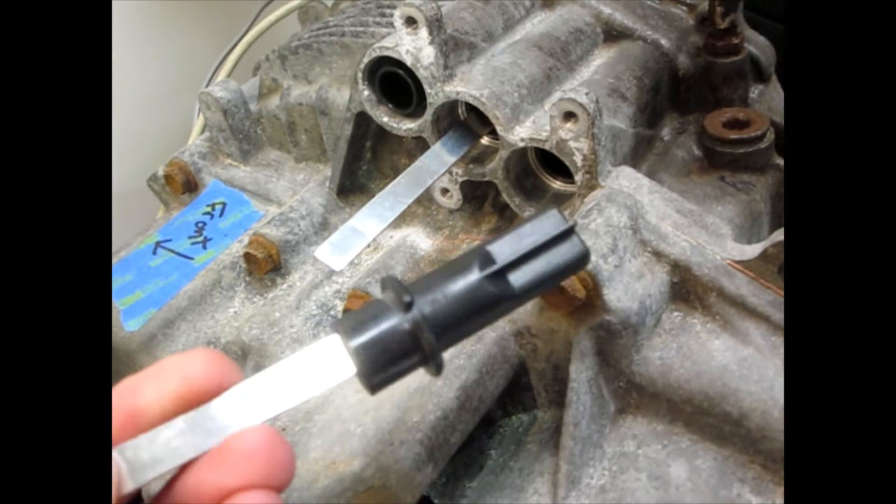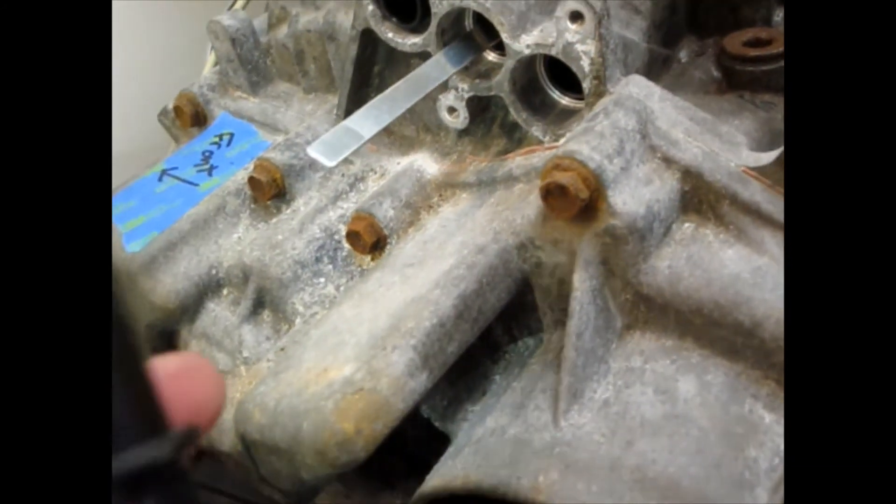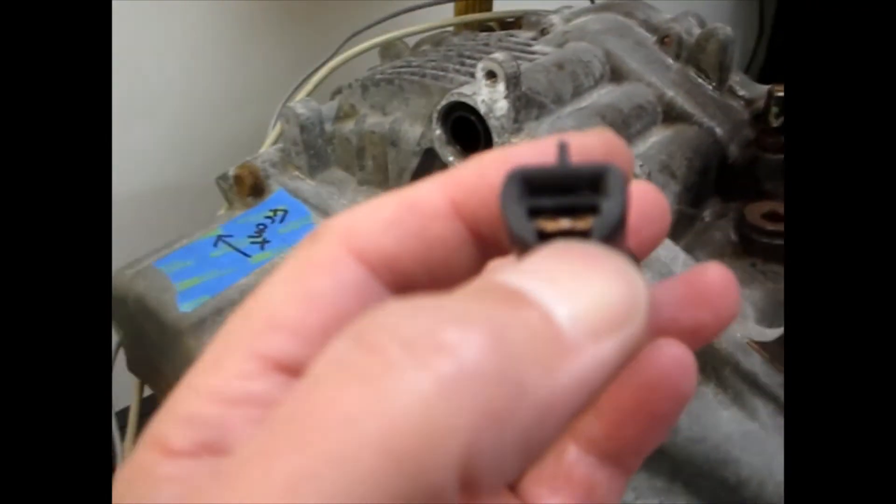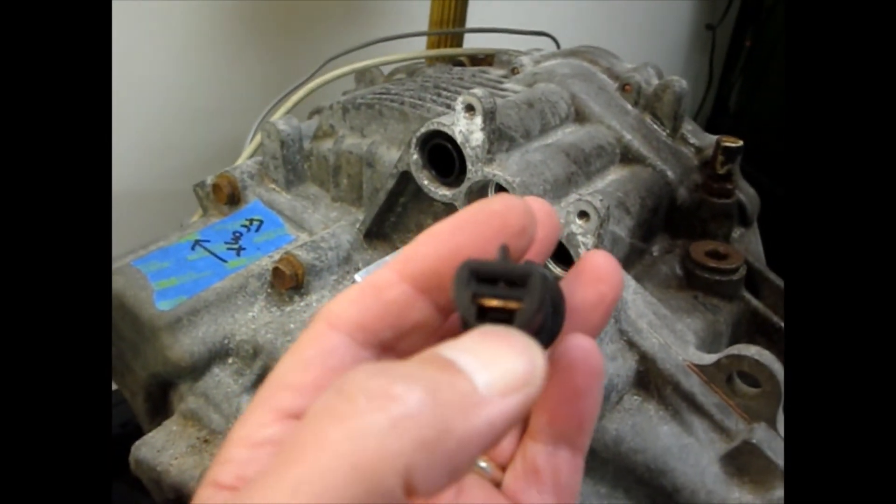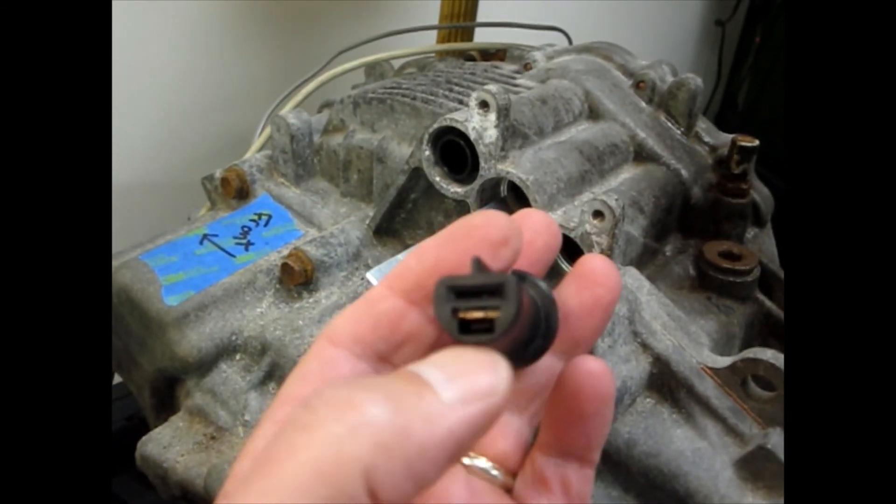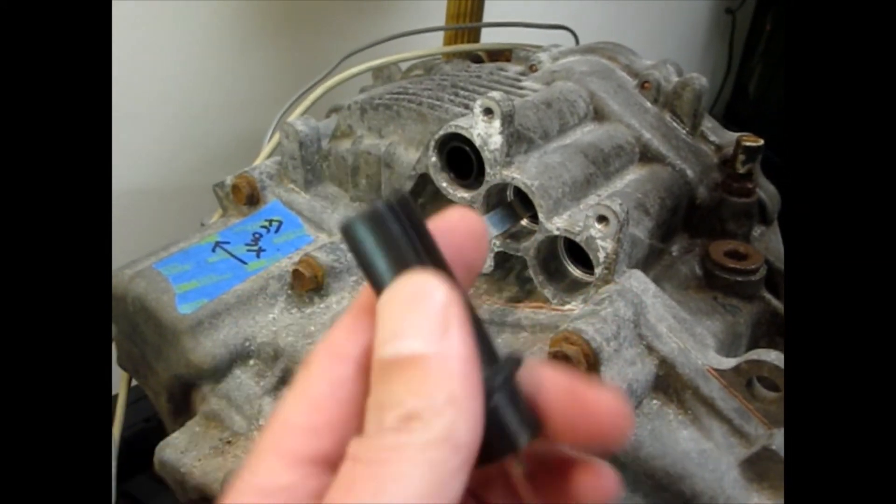And there's the little tab. To release it is right inside here. If I can get this to focus. You see that little tab in there? Right at the bottom. Just put a screwdriver in there, pry it down, and you can pull this sleeve right off.